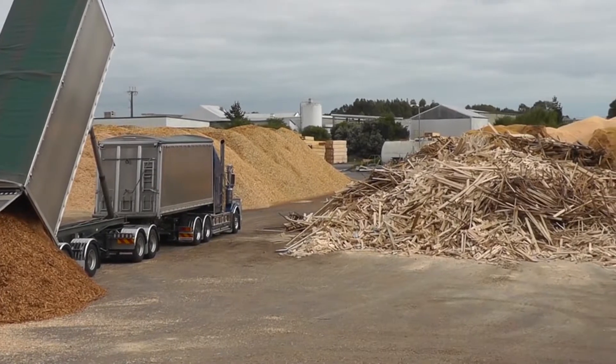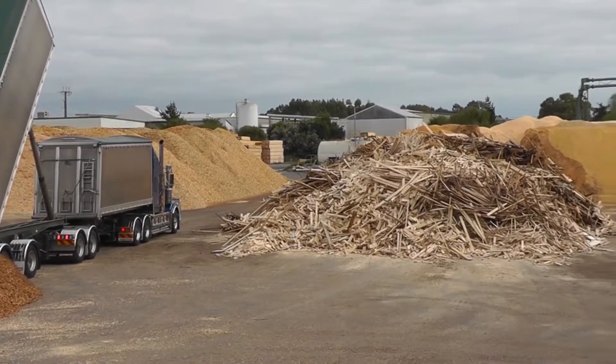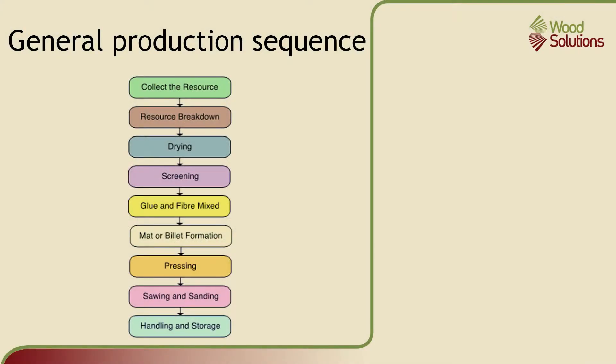The main production stages for making particle boards include: collecting the resource, breaking down the resource, drying, screening, glue and fibre mixing, mat and billet formation, pressing, board sawing and sanding, and handling and storage.